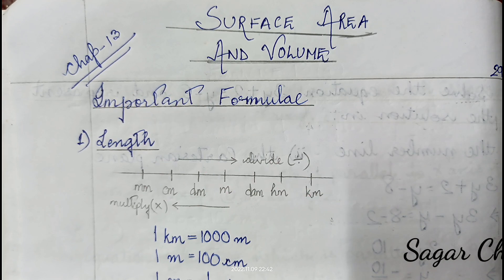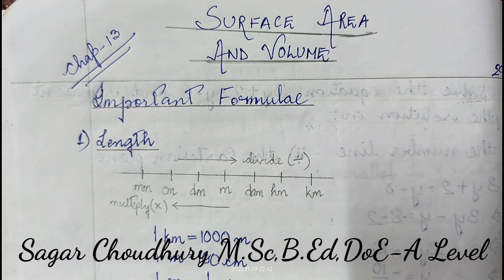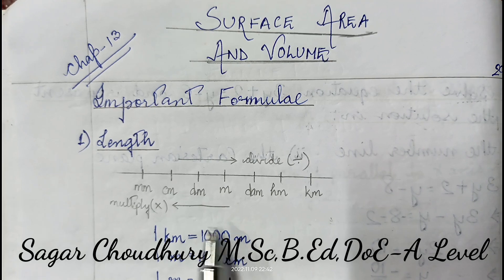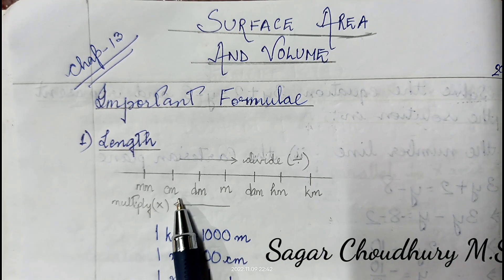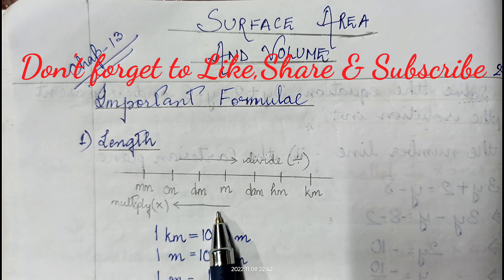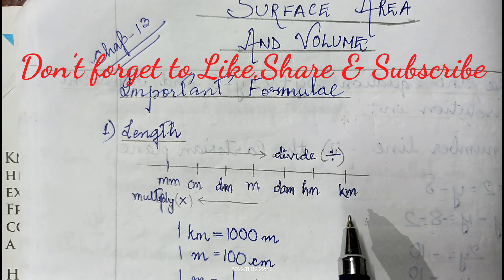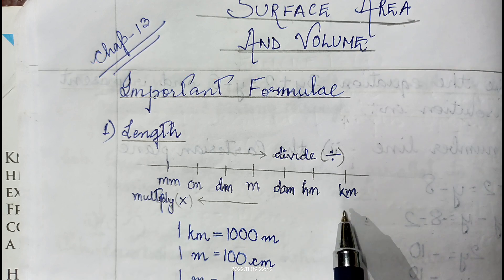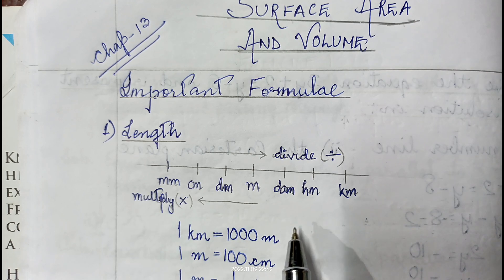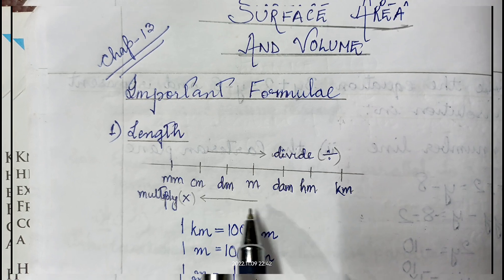Before starting the chapter, let me give you some basic idea about how to convert different units, like from millimeter to centimeter, centimeter to meter. These conversions are very much needed while doing this type of sums. In the metric system, the smallest unit is millimeter and the highest is kilometer.